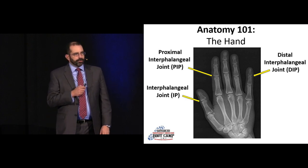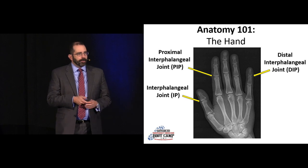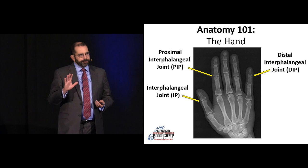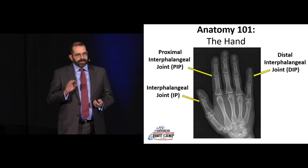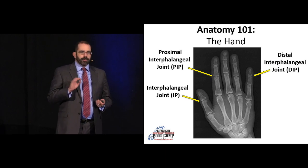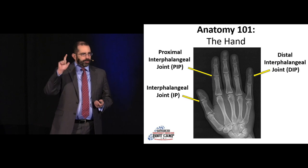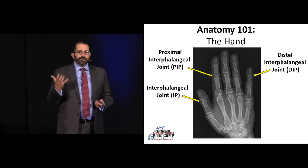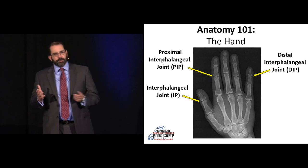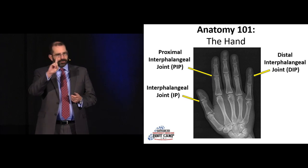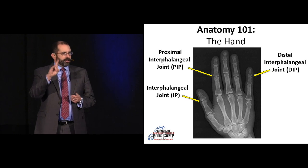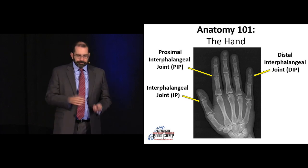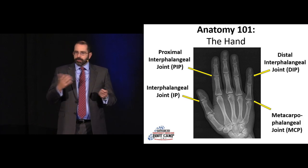The thumb only has an interphalangeal joint (IP). In terms of naming digits, most hand surgeons vastly prefer that you name them rather than number them: thumb, index, middle, ring, and little or small finger. This eliminates ambiguity — is this the first finger or the second digit? Most hand surgeons really prefer you to name the digits.